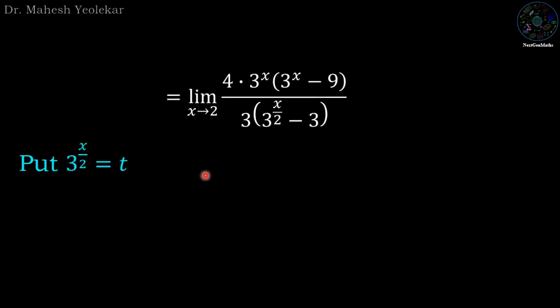If we put 3^(x/2) equal to t, as x approaches 2, so 3^x approaches 3, so t approaches 3.